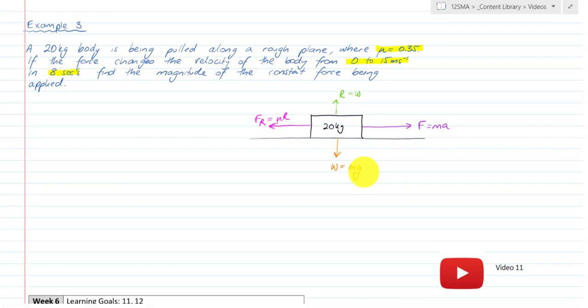We've got a 20kg body, which means we know a few things. The weight equals 20g, which is 196 newtons. Therefore, R equals 20g as well, but in the opposite direction. FR, and this is FR max by the way, equals 0.35 times 20g, which is 7g. And we've got F as well, equal to 20 times A.